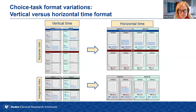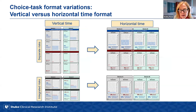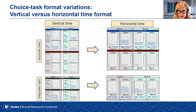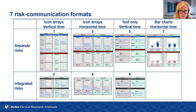Another consideration in this study was a time element where risks increased over time. Since time is often presented on an X axis, we transformed the choice questions to show time in a horizontal fashion — with both separate and integrated icon arrays. We tested an overall total of seven risk communication formats. In addition, there was a bar chart format, which we thought was promising given that we could emphasize the rate of increase between year two and year five. We randomized about 1,200 individuals to these seven presentations.